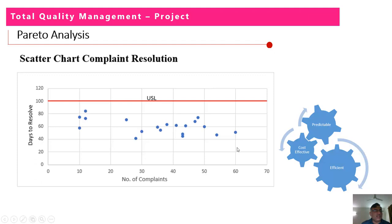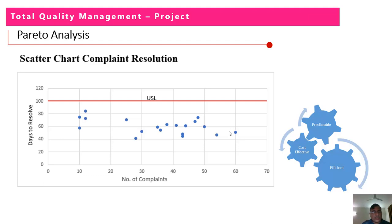In this slide, we have marked number of complaints on the horizontal axis and number of days on the vertical axis. The picture which emerges after plotting the data is visible. The data is still within the upper control limit, which is set to 100 days. The relationship between these two variables depicts that complaint resolution is being done in prescribed time duration. To improve quality and reduce losses, we need a more stringent upper control limit.